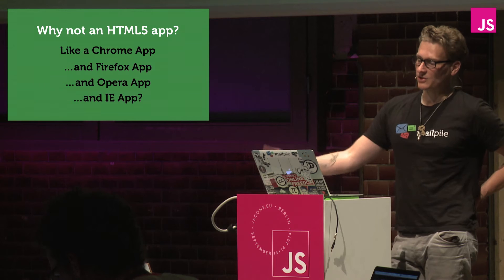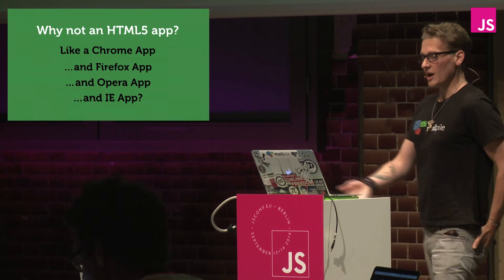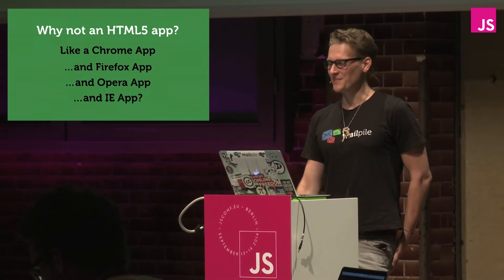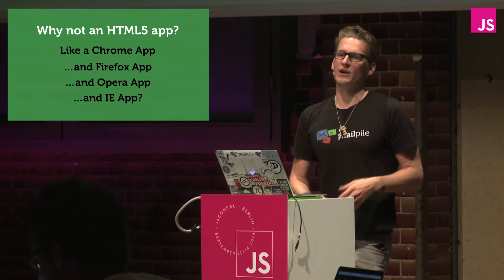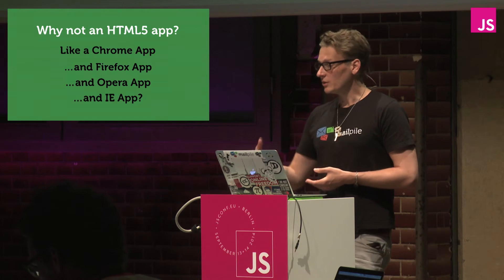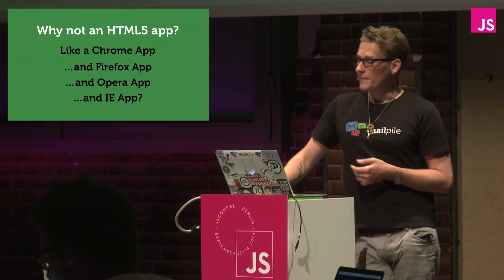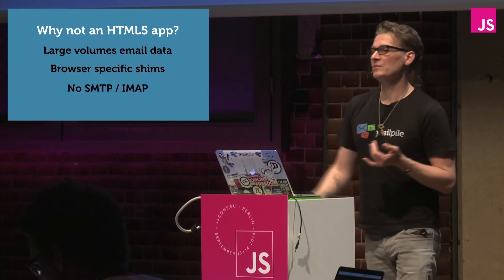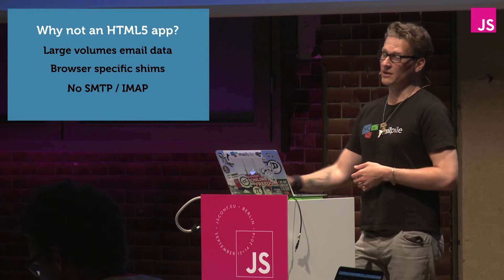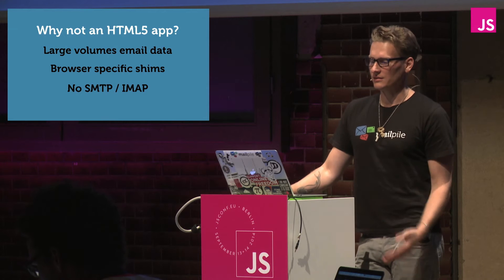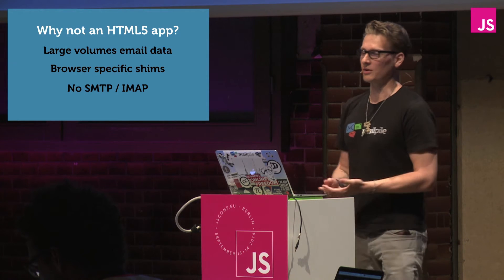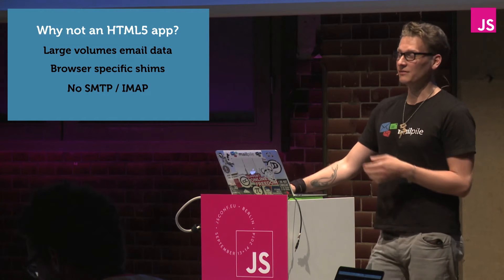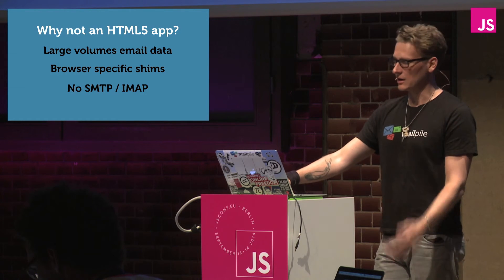Why not choose an HTML5 app — like a Chrome app or a Firefox app or an Opera app? In that case you'd know you're getting a browser that has the APIs available to you and you could be doing the cryptography in JavaScript, which would be cool. But with email you're dealing with large volumes of email data. We'd have to write numerous browser-specific shims to access the file system in each one of those apps, and that would become a nightmare. The big no-brainer is that there's not really SMTP or IMAP support from a browser app — Firefox OS is making progress, but as far as the rest of browsers it's not quite doable.